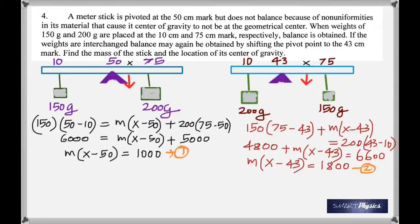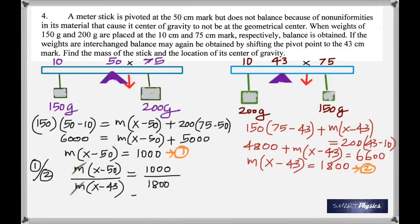So now I have two equations, equation one there and equation two. You have two equations with two unknowns and you can solve these simultaneous equations any way you like, but I'm going to divide one by two. The advantage of that is the masses will get cancelled.